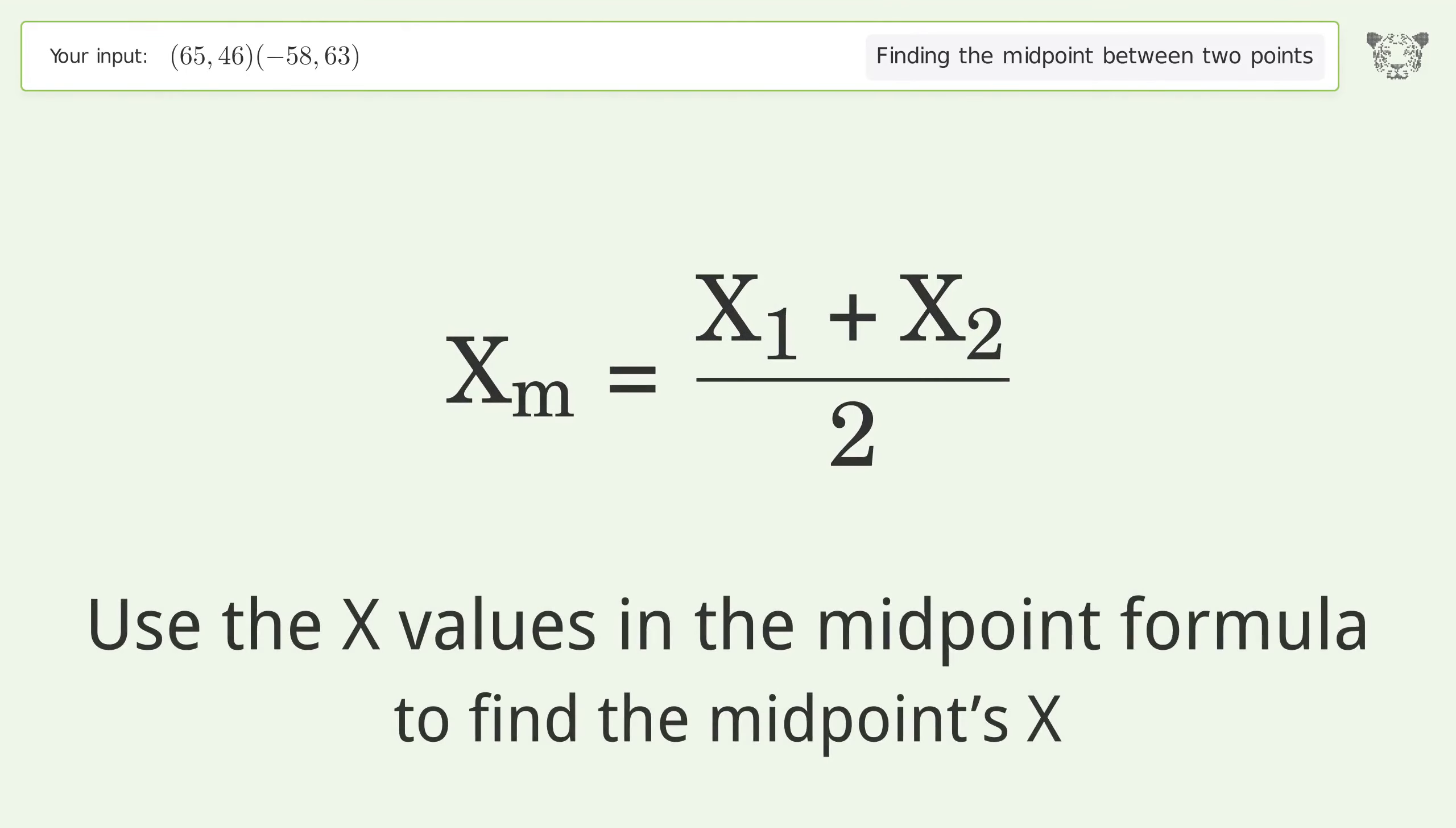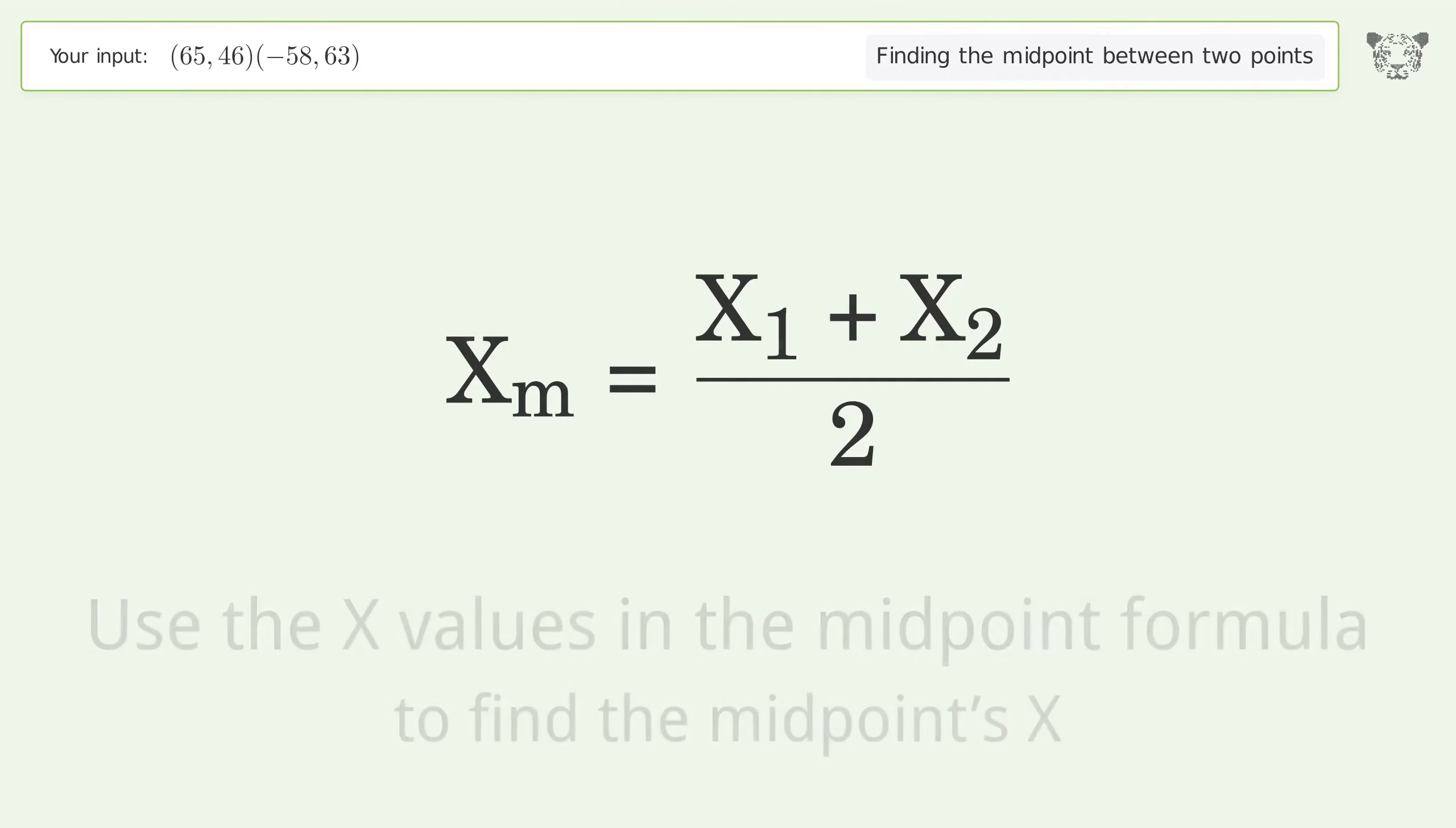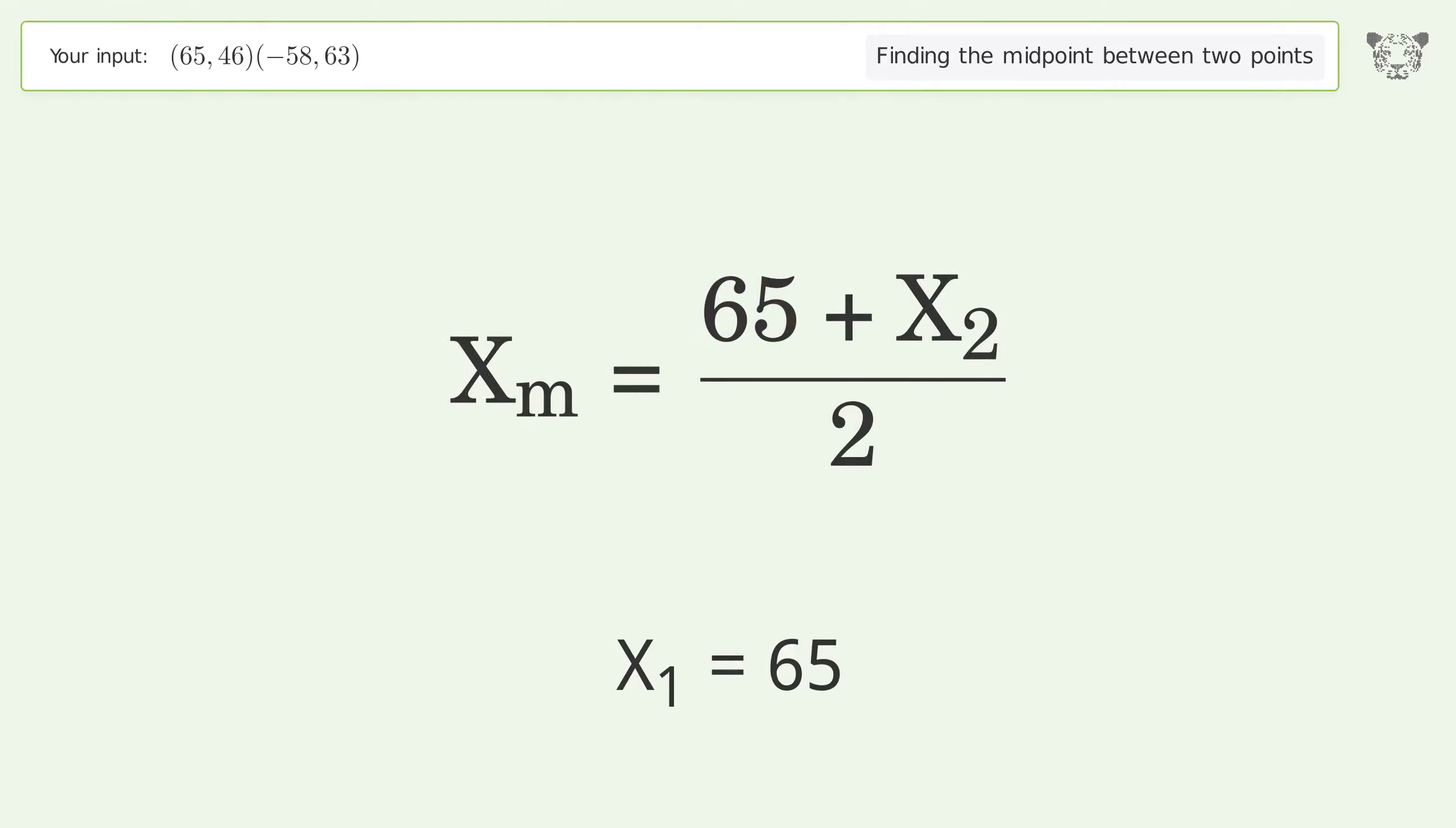Use the x values in the midpoint formula to find the midpoint's x. X1 equals 65, x2 equals negative 58.